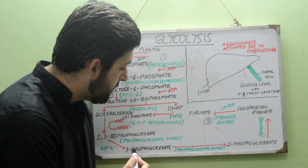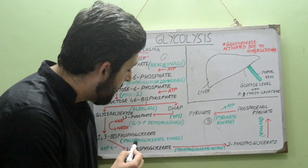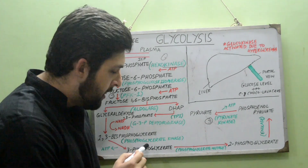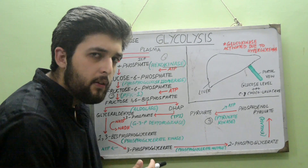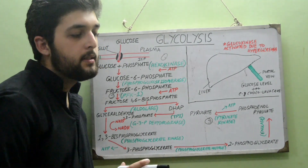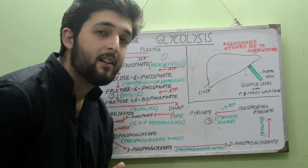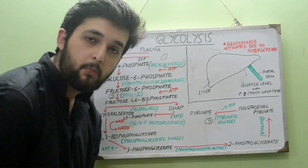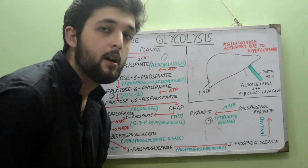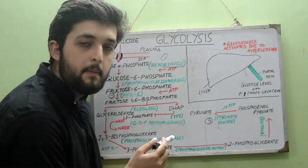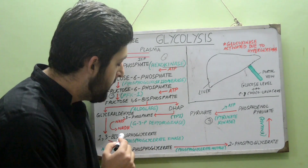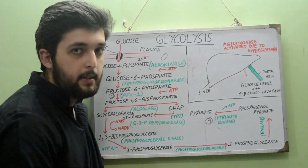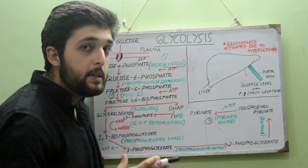The remaining 1,3-BPG is converted to 3-phosphoglycerate by phosphoglycerate kinase. Although a phosphate is being removed here, the enzyme is called 'kinase' because it is a reversible reaction — in gluconeogenesis, the reverse direction adds a phosphate to 3-phosphoglycerate to regenerate 1,3-BPG.